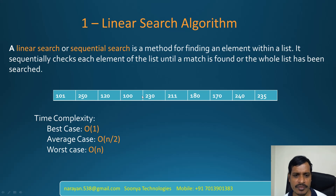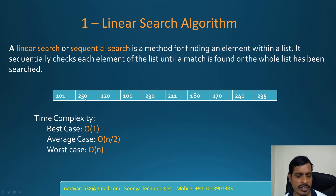If you don't find the item, it will also check all the items, so that is also the worst case. Here we have 10 items. The average case is O(n/2), that means 10 divided by 2 is 5. For student ID 230: 230 equals 101 — no; 230 equals 250 — no; 230 equals 120 — no; 230 equals 100 — no; 230 equals 230 — found! This is the fifth iteration, which is the average case.